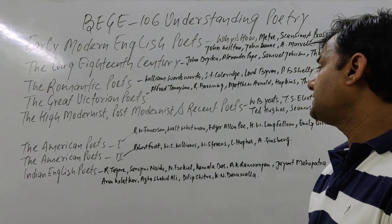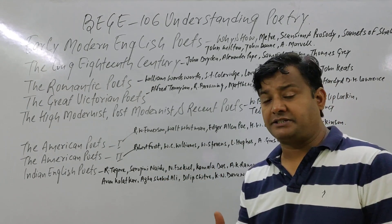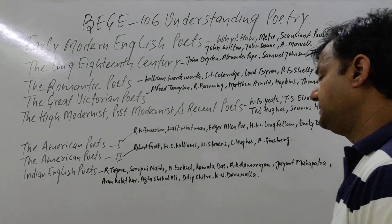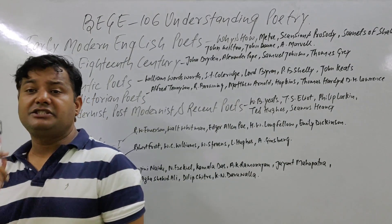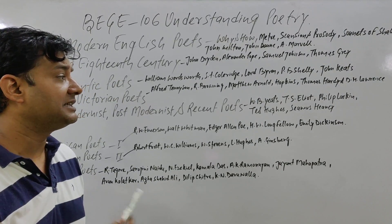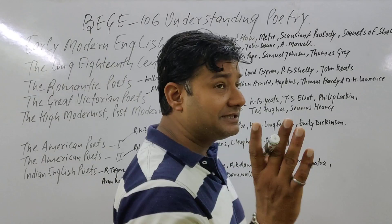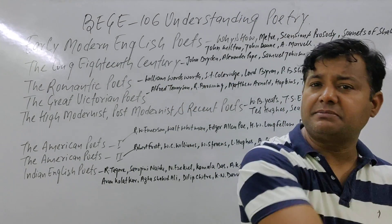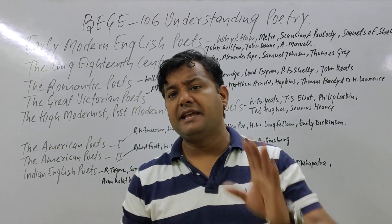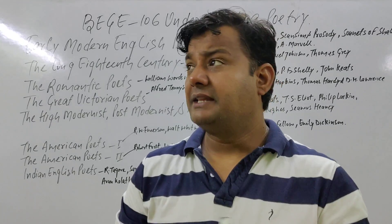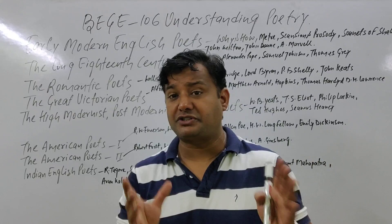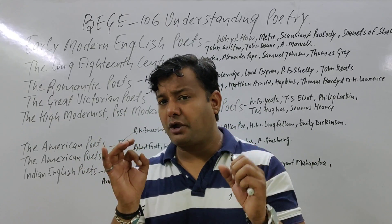Come to the next phase: the High Modernist, Post-Modernist, and Recent Poets. First up, W.B. Yeats — we need to study his poetry carefully and we cannot skip it. We also have Philip Larkin, Ted Hughes, and Seamus Heaney. For each poetry, three things matter: the text, the summary of the poetry, and then the critical analysis.